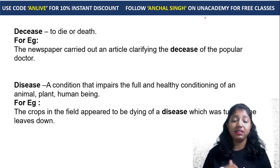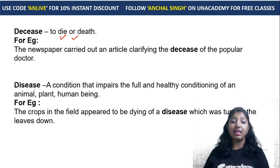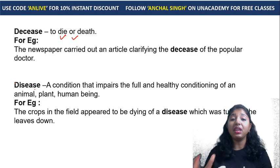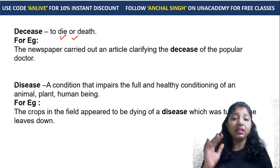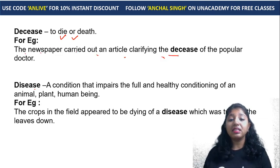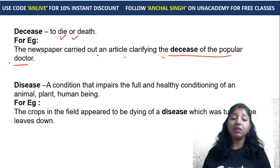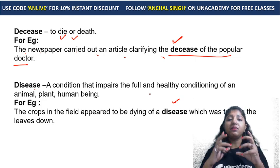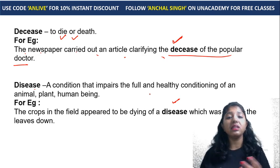Deceased and disease — deceased means to die or death. For example: 'The newspaper carried an article clarifying the decease of the popular doctor' — someone passed away. Disease means a condition that impairs the full and healthy functioning of an animal, plant, or human being. For example: 'The crops in the field appear to be dying of a disease' — a condition causing the leaves to turn down. Both words sound almost the same but their meanings are totally different.